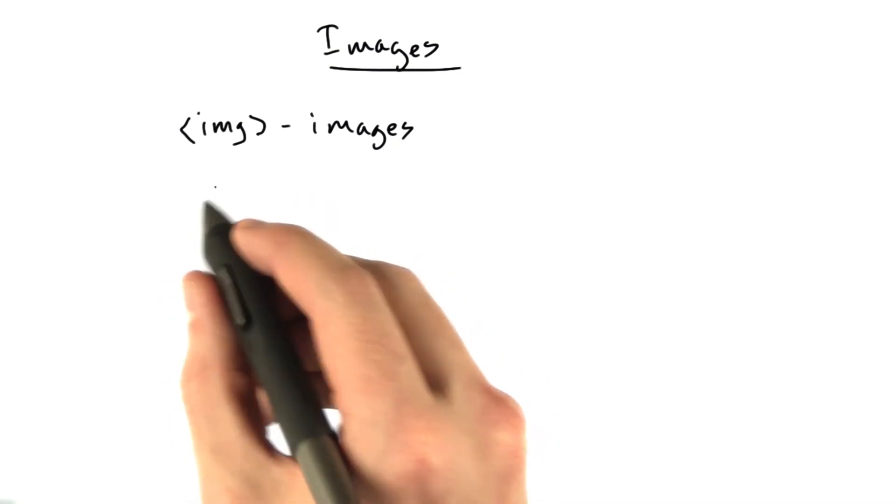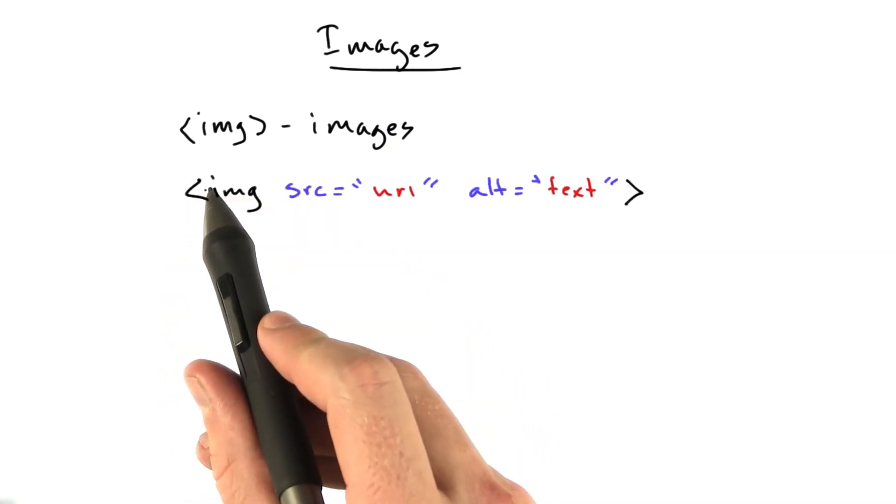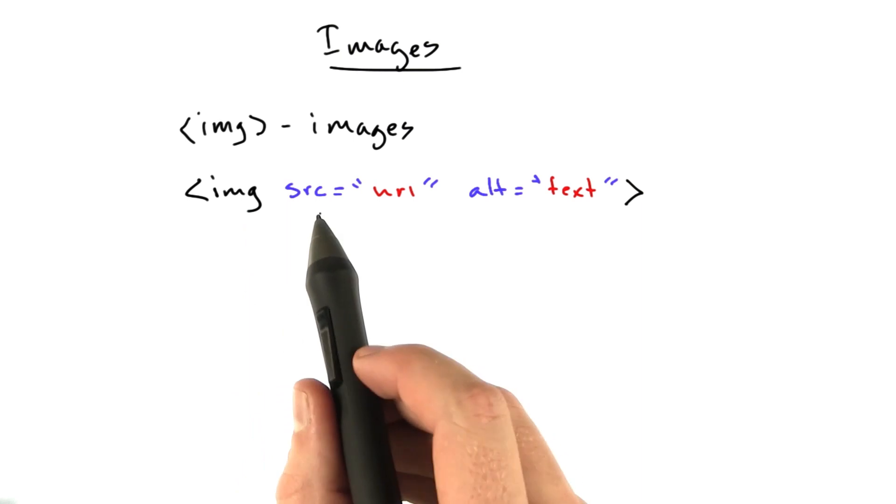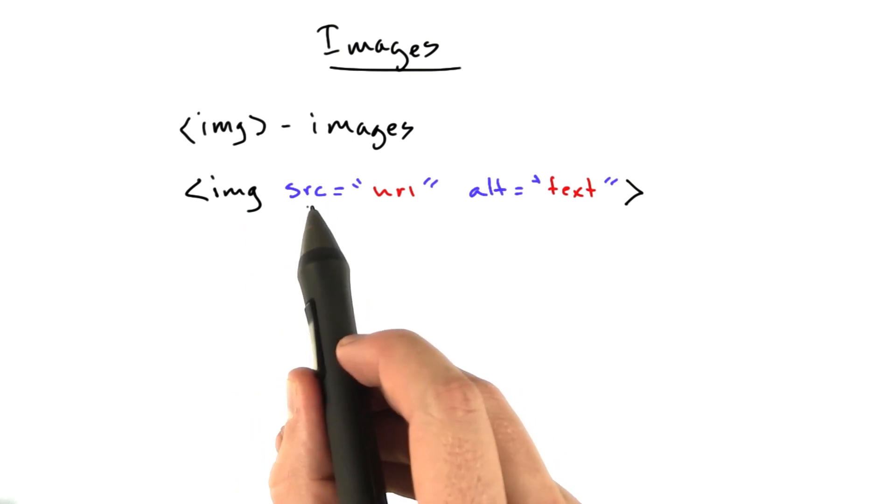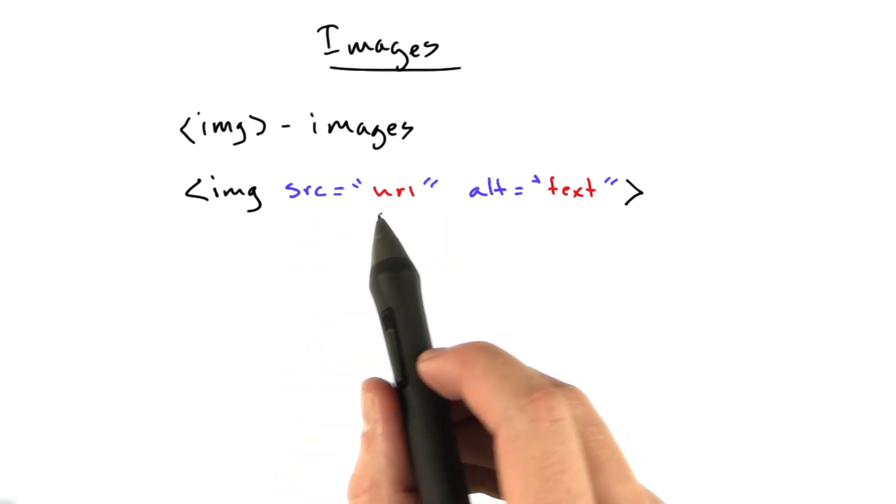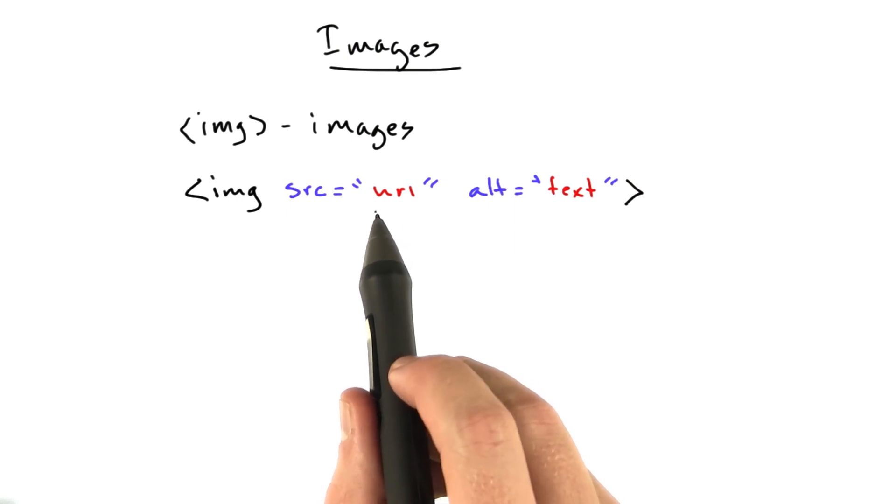It has the following structure: the opening img tag. It has an attribute called source, src equals, and this equals the URL. This is the URL of the image to download.